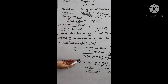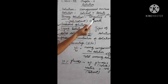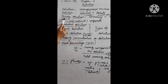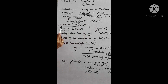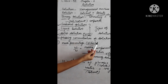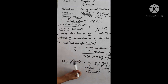In summary, the important points of the chapter Solutions are: solutions are homogeneous mixtures with two components — solute and solvent — making them binary solutions. According to physical state, solutions are divided into gaseous, liquid, and solid. The first method for expressing concentration is mass percentage (w/w).